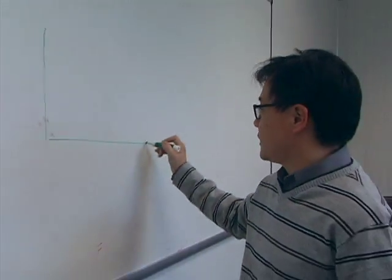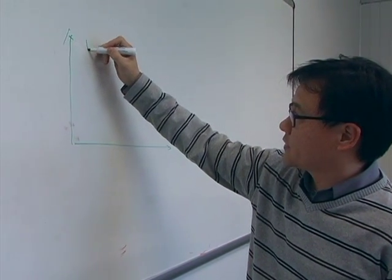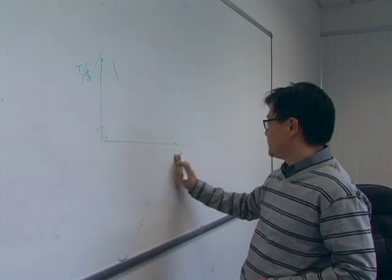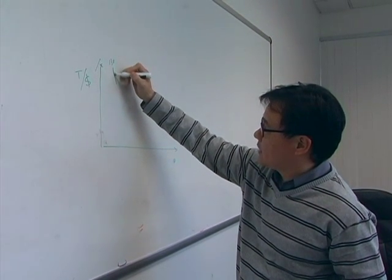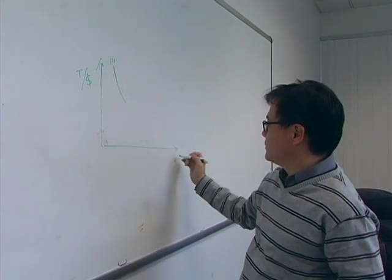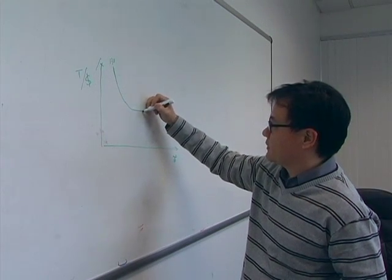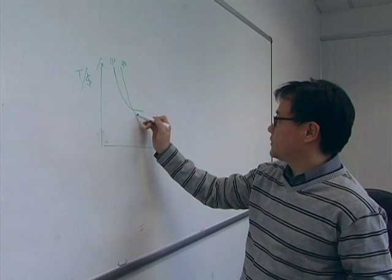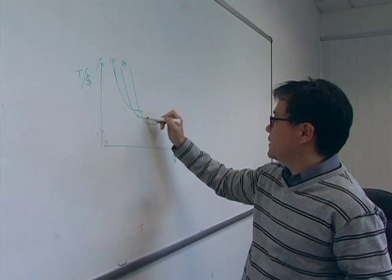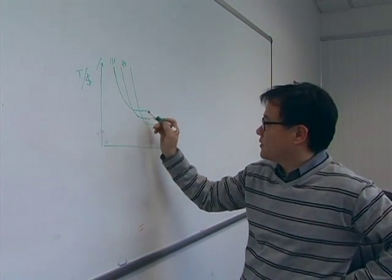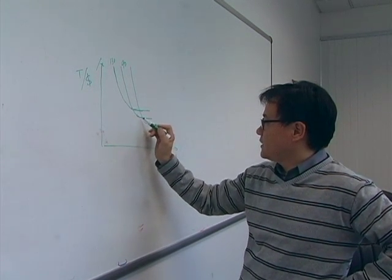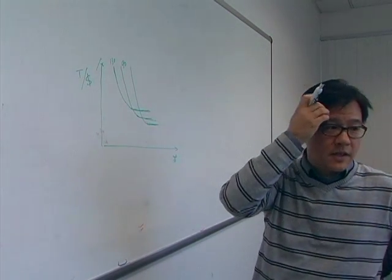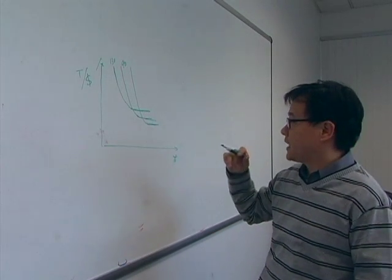As you look at process scaling in the past decades, a new process starts very expensive — this is the cost of each transistor at a particular process node. For example, 130 nanometers starts very expensive, and as time goes, the cost per transistor goes down and ultimately flattens out when the technology is mature. You have the same curve at 90nm, starting expensive but also flattening out. The next node is always cheaper than the previous node once mature, and that has been the economic driving force for most large companies to continue scaling to advanced nodes.